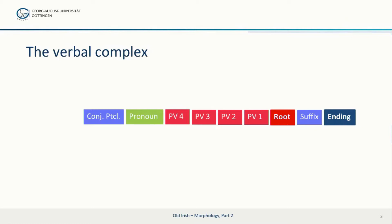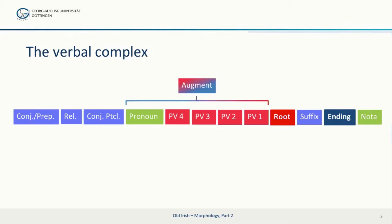Other elements that are incorporated into the verbal complex, if they are present, are the so-called conjunct particles — that means sentence-modifying elements as well as various conjunctions — grammatical and pronominal prefixes, infixes, and suffixes.